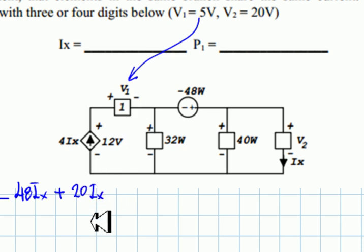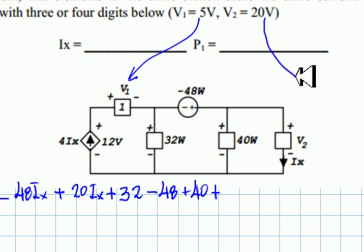Positive, that is this one. Positive power, 32 watts minus 48 watts plus 40 watts here, plus the power here. This element is absorbing power by the polarities and directions. And that power is 20 times IX. That has to be equal to zero. From there, we can solve for IX.